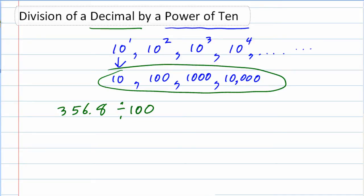The nice thing about these problems is that because we're dividing by 10, 100, 1,000, which just has the one with the zeros behind it, it really becomes just a task of moving the decimal.